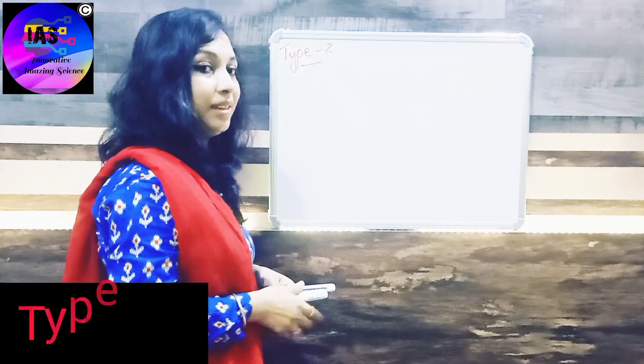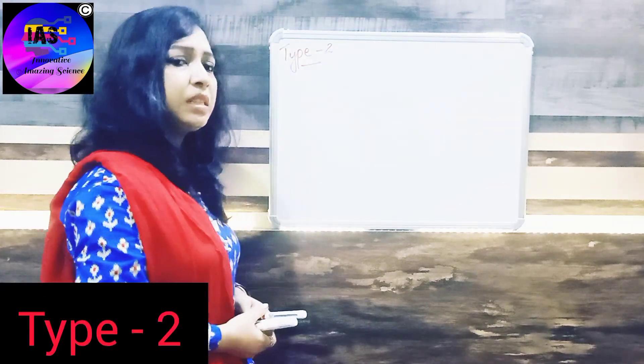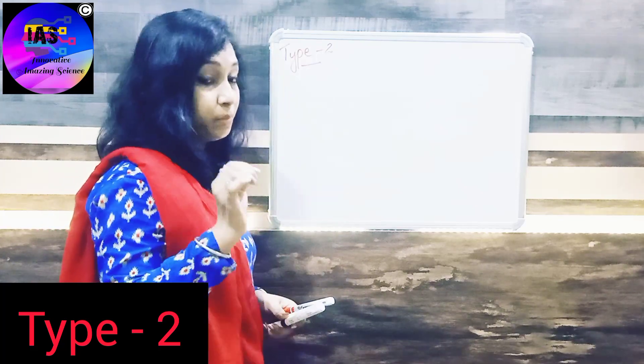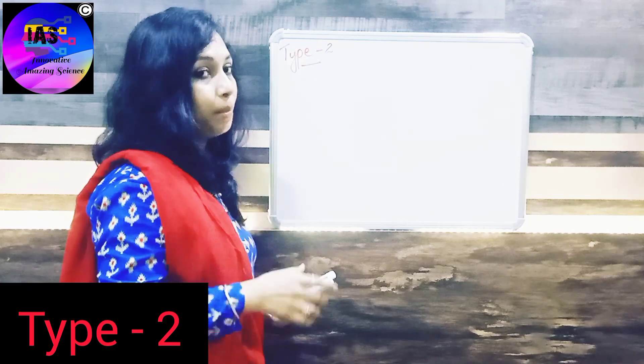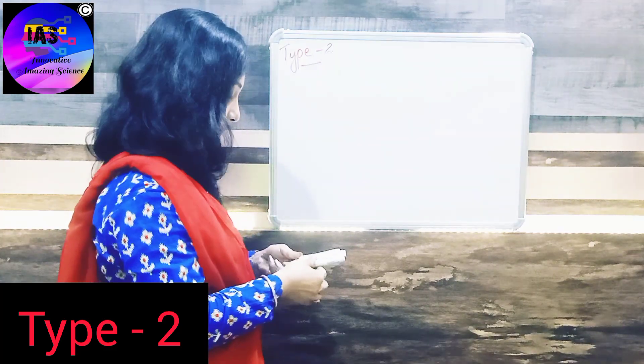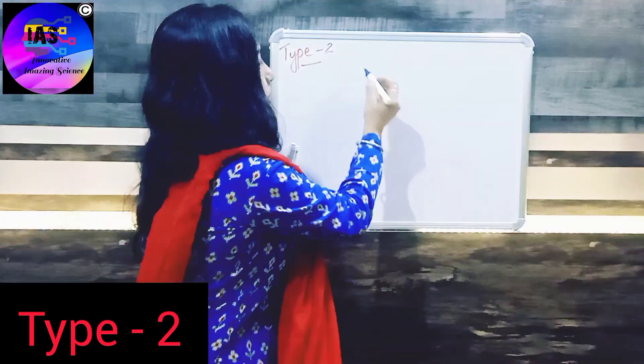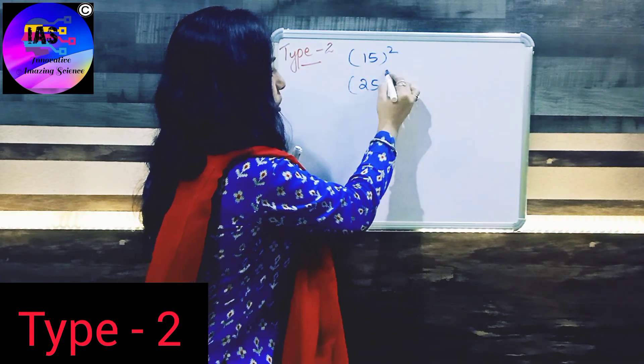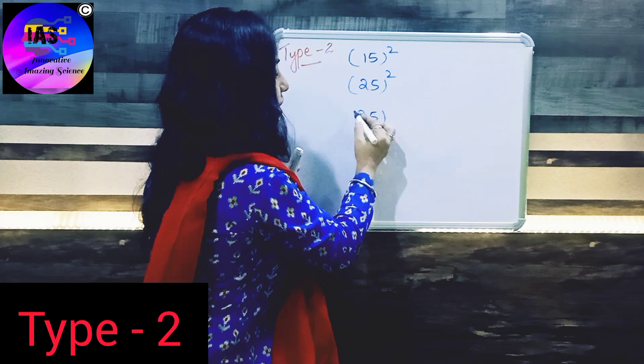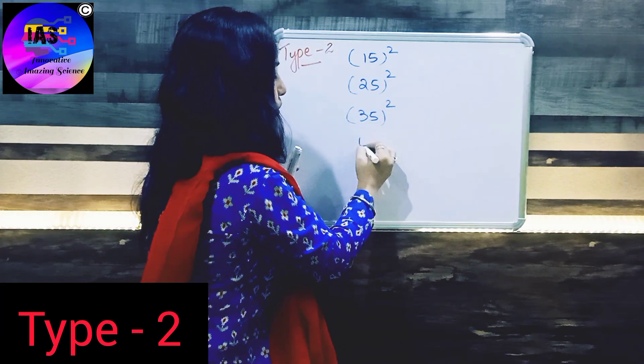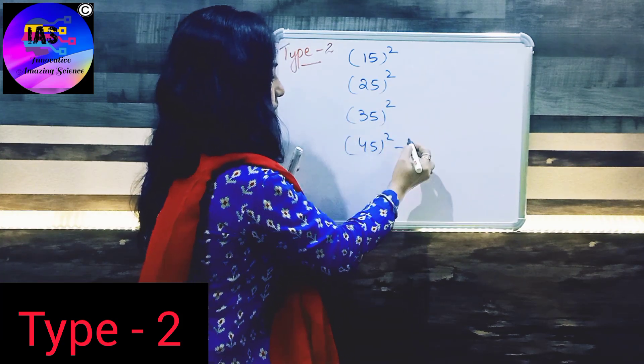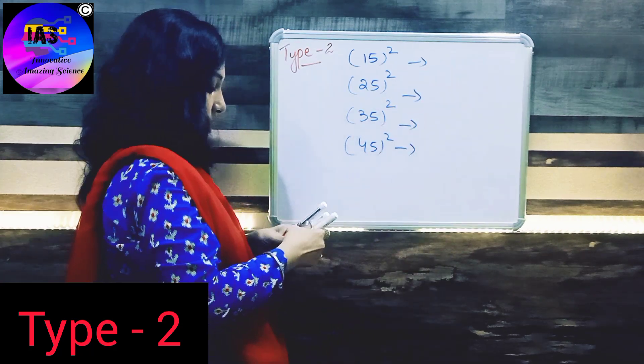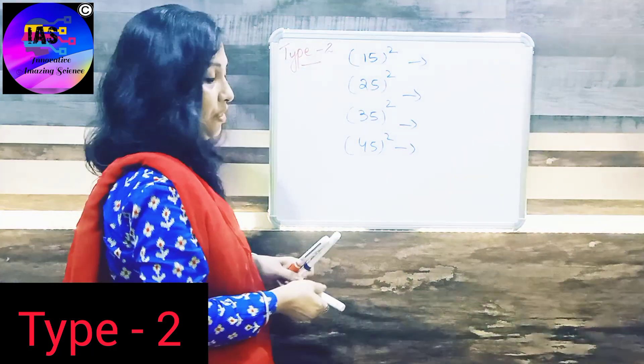So now let's see the Type 2 method. In this type, we will take numbers that end with 5 - that means in the ones place the number should be 5. First, let me take 15 square, 25 square, 35 square, 45 square. So how to do this calculation?